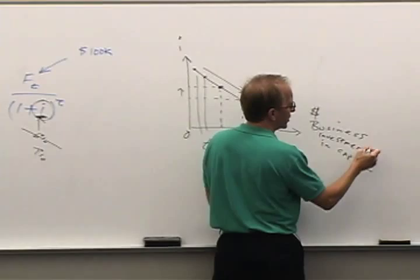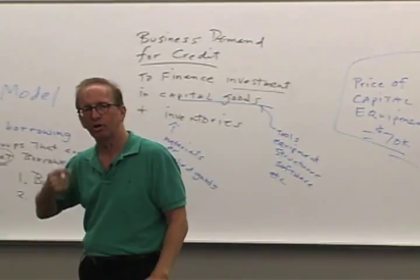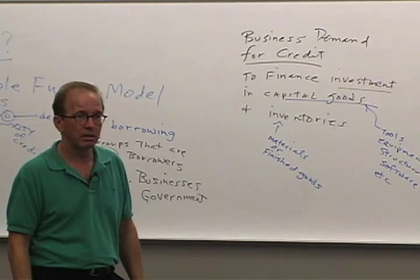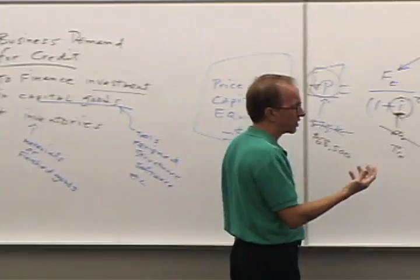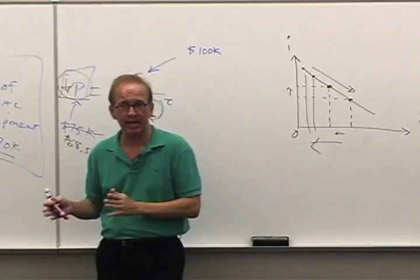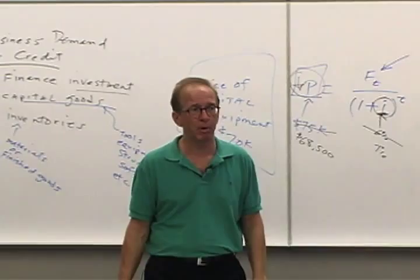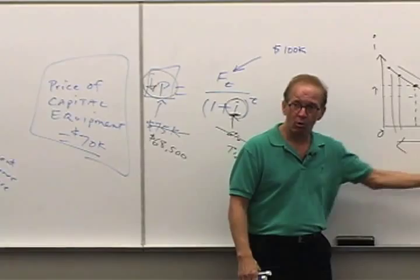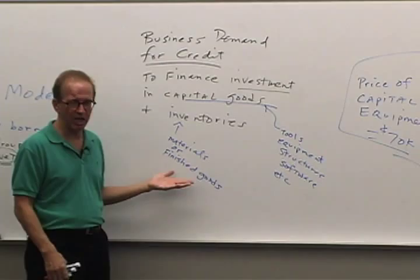What we're interested in here is business borrowing. Some businesses pay for their investment in capital goods out of their own cash flow or by selling stock — those are issues in corporate finance. But we are interested in those capital projects financed by borrowing. The lower the interest rate, the more businesses will go out and borrow to finance capital projects and to hold inventories.